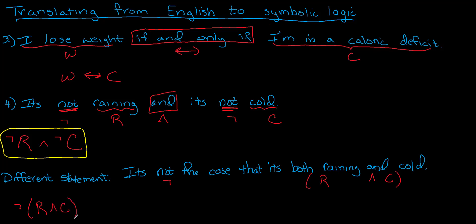Here what we have is not, parentheses, R and C. It might be raining but not cold, or it might be cold but just not raining. This last statement is saying it's not both of those things—it might be one of them, but it's not the case that it's both. So those two statements are very different.